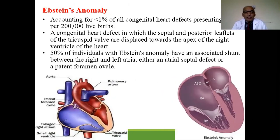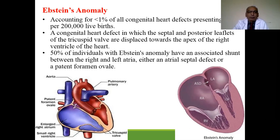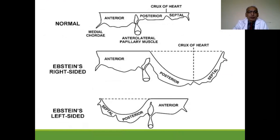The third cyanotic congenital heart disease is Ebstein anomaly, accounting for less than 1% of total congenital heart defects. The septal or posterior leaflet of the tricuspid valve is displaced downwards towards the apex of the right ventricle. In 50% of individuals with Ebstein anomaly, there is an associated septal defect — either ASD or patent foramen ovale.